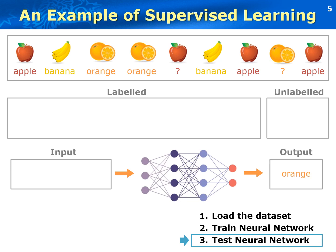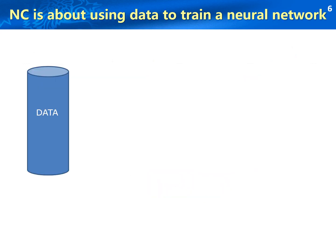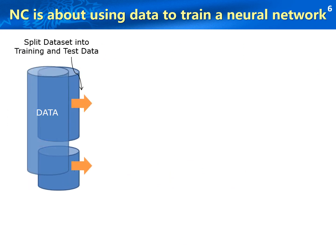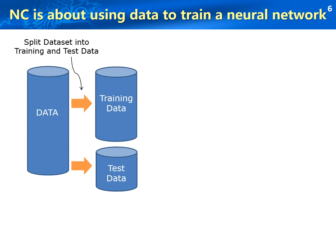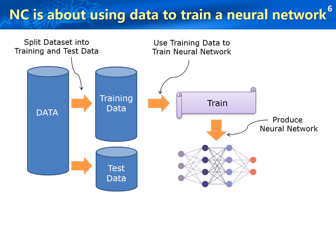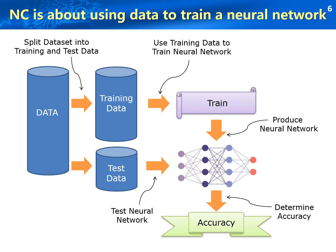Based on this example, we can see that neural computing is all about using data to train a neural net. We first split the dataset into training data and testing data. Then, using training data, we train our model to produce the neural network. Then, using test data, we use the neural network to predict the output for new inputs and determine the predictive accuracy.